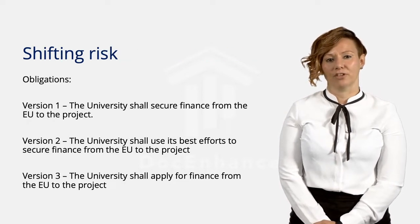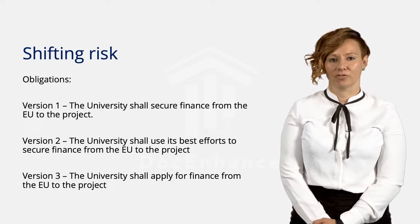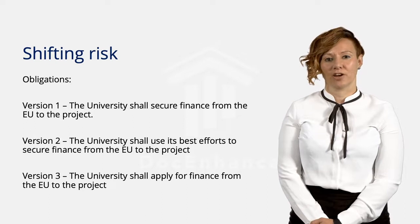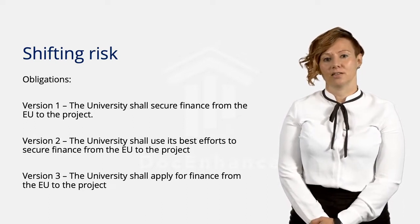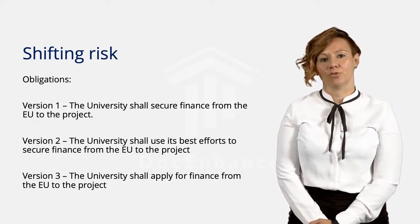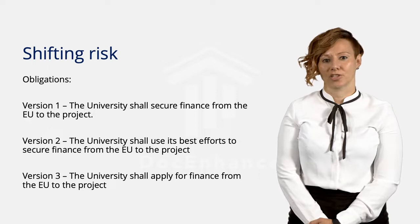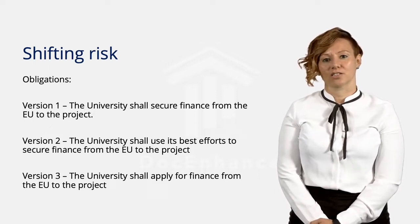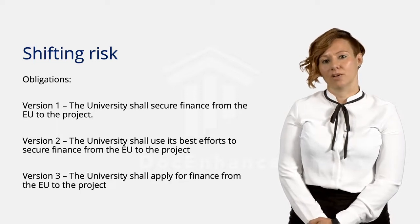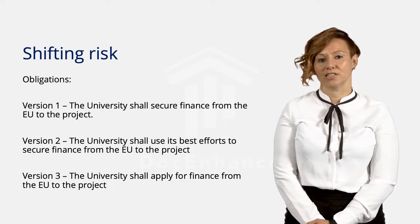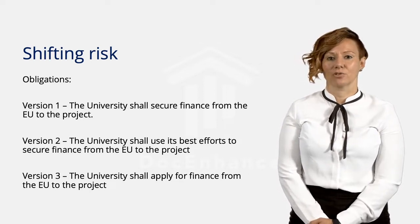The first example of shifting risk is when drafting the obligations of the parties. In Version 1, the university shall secure finance from the EU for the project. This is equivalent to a flat representation — it is the university's absolute promise to obtain finance from the EU for the research project. The promise is very high risk for the university as it has no control over the outcome. The EU has no obligation to provide finance and an application could easily be rejected.